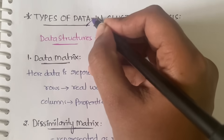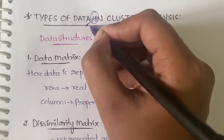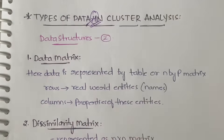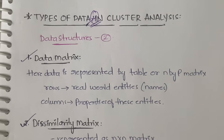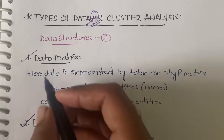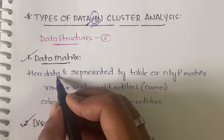We have four types of data to discuss, but before discussing about data, let us see what data structures are supported. We have two data structures: one is the data matrix and the other one is the dissimilarity matrix.